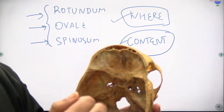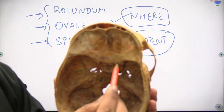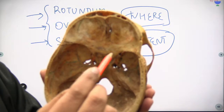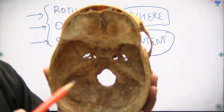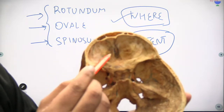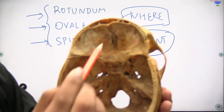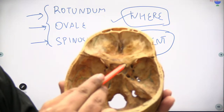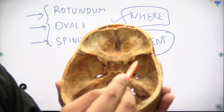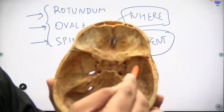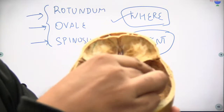This is the anterior cranial fossa with the lesser wing of the sphenoid. Slightly more inferior is the middle cranial fossa, and further back is the posterior cranial fossa. In the anterior cranial fossa, I would like to show you first the crista galli here, and these are the cribriform plate of the ethmoid — this is where the olfactory nerve (nerve number 1) passes. Then this is the optic canal — optic nerve, nerve number 2, comes out here along with the ophthalmic artery.